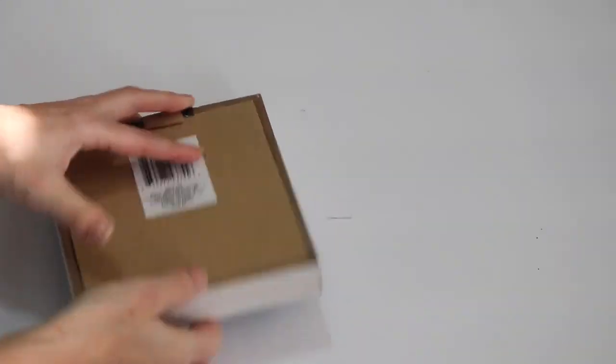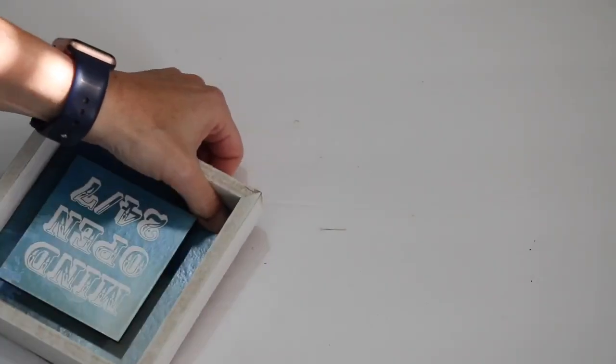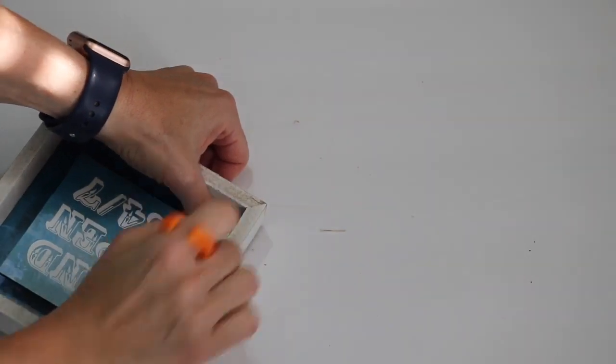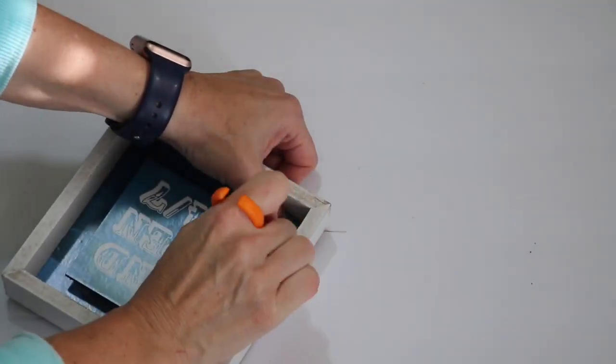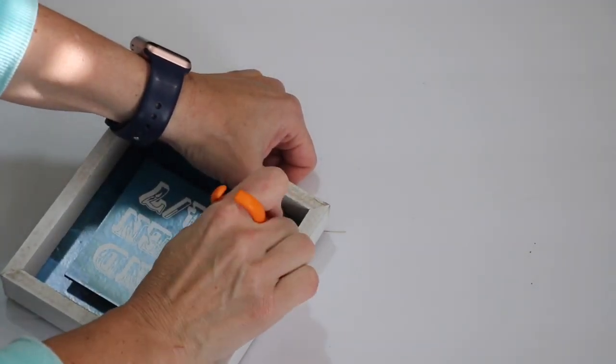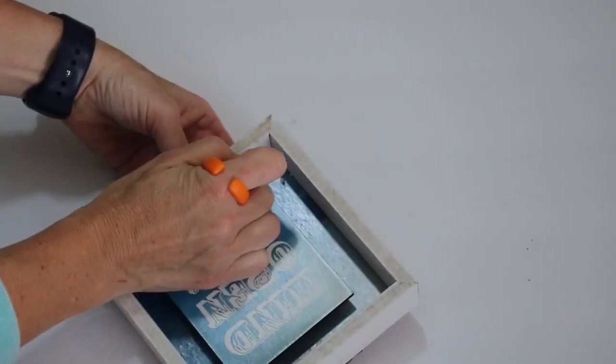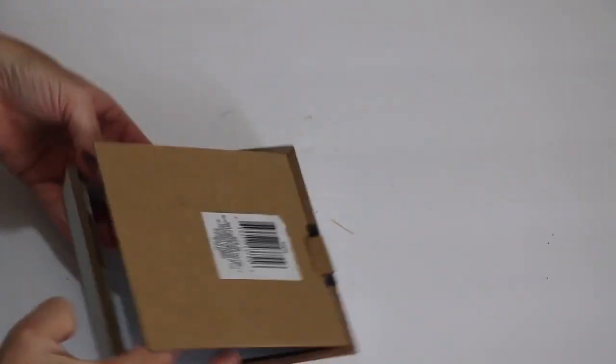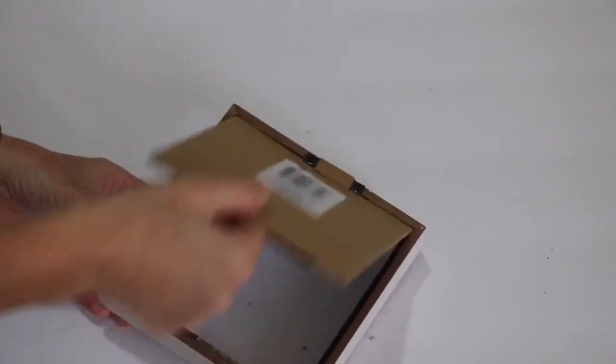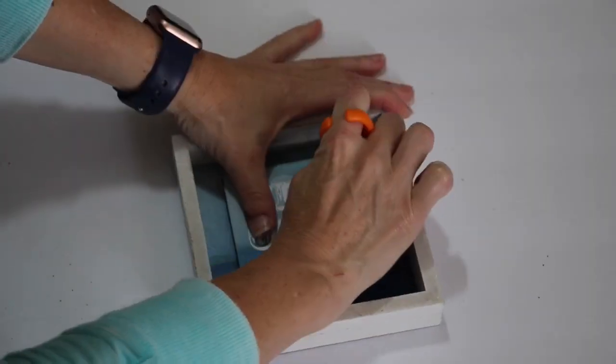Now each box is a little different on how it's holding on and how much and where exactly you need to score, and so I just kind of play around in the areas that it needs it and I score in different areas. As you do that, you'll see that it will pop off. You will have a little extra paper in areas and don't worry about that. We'll go back to that in a minute.